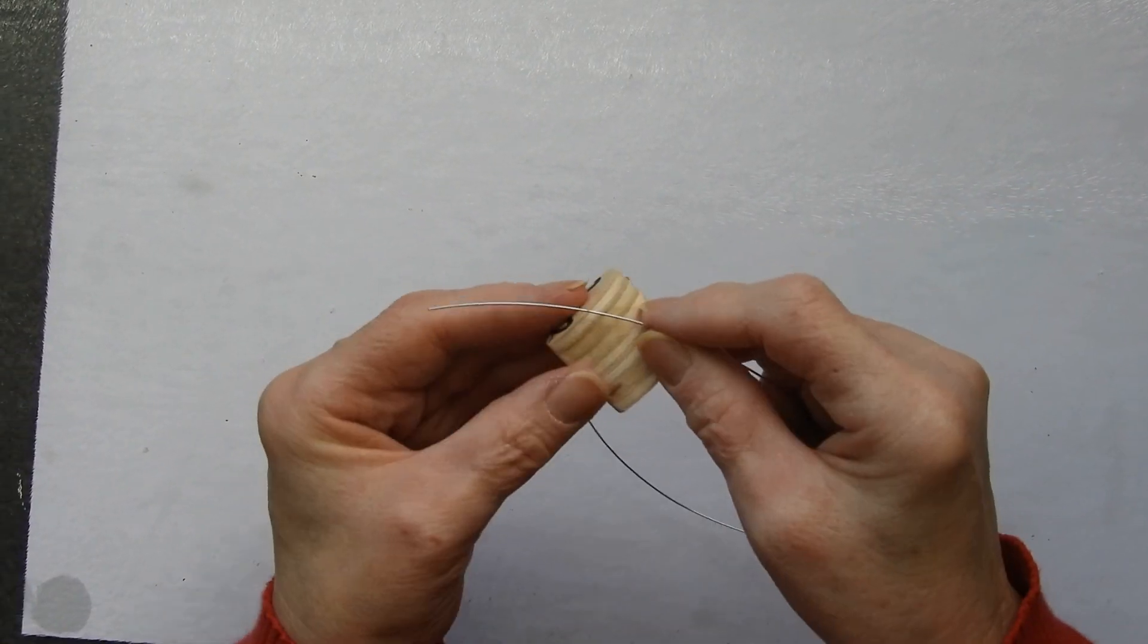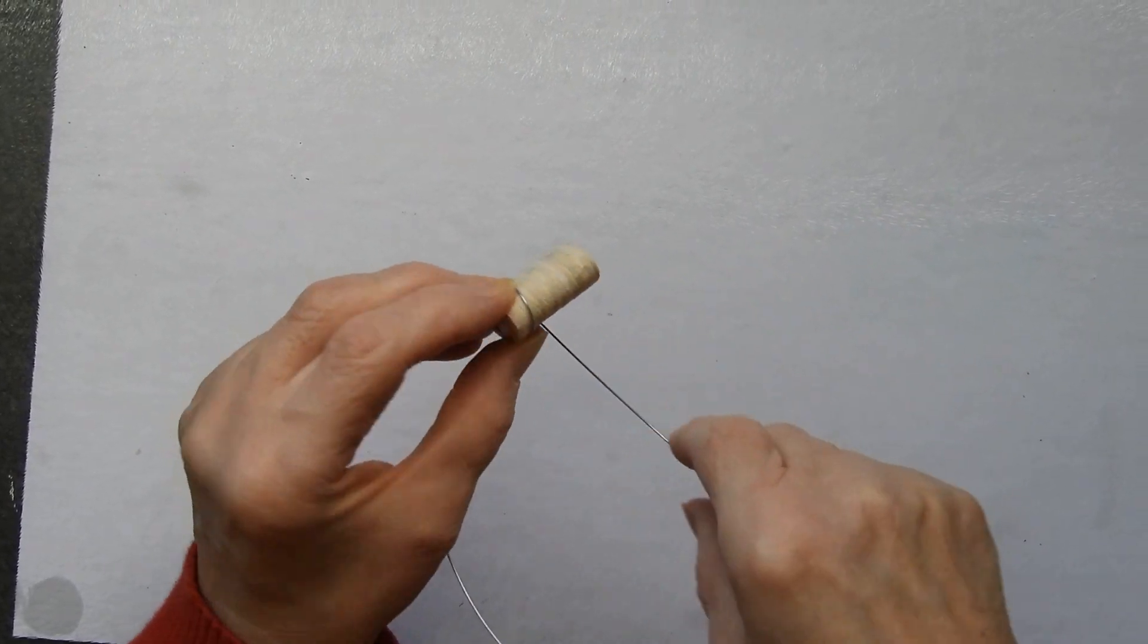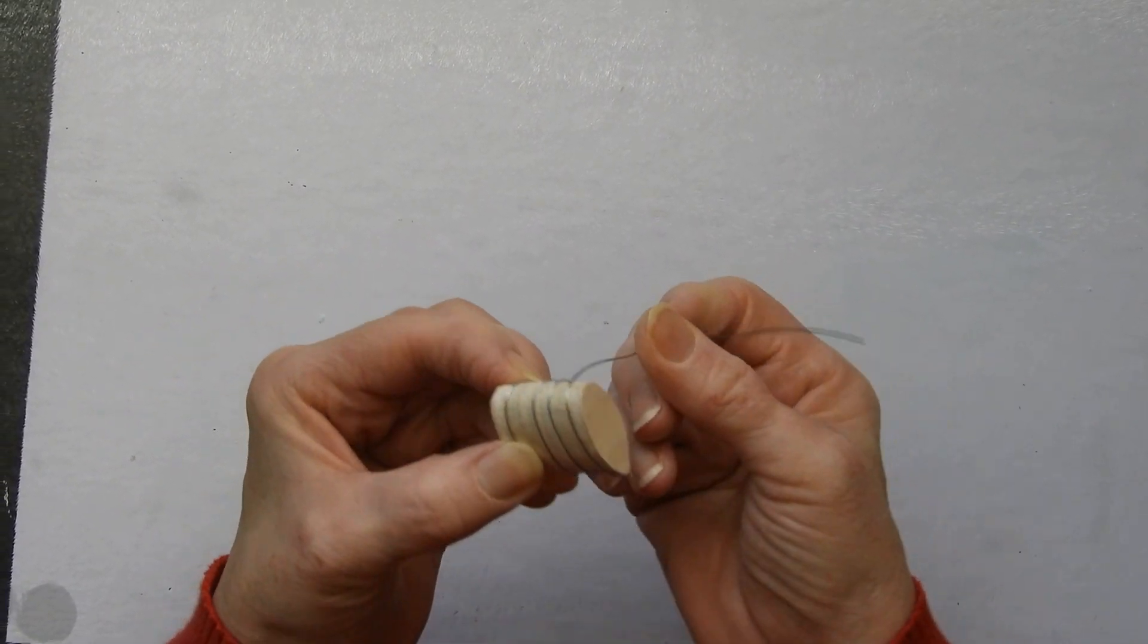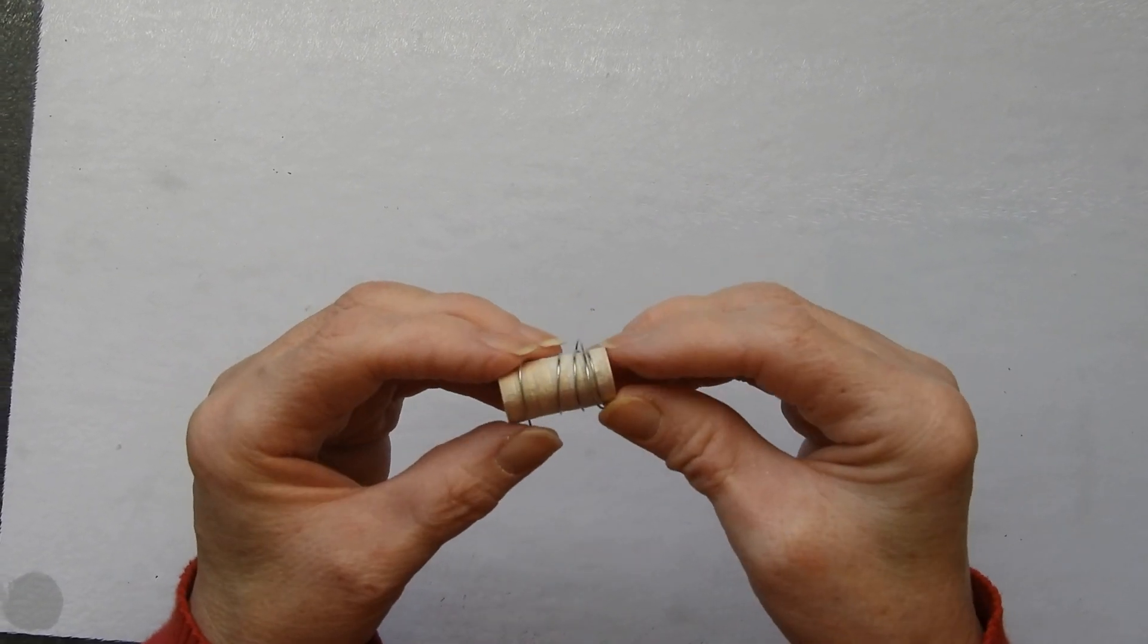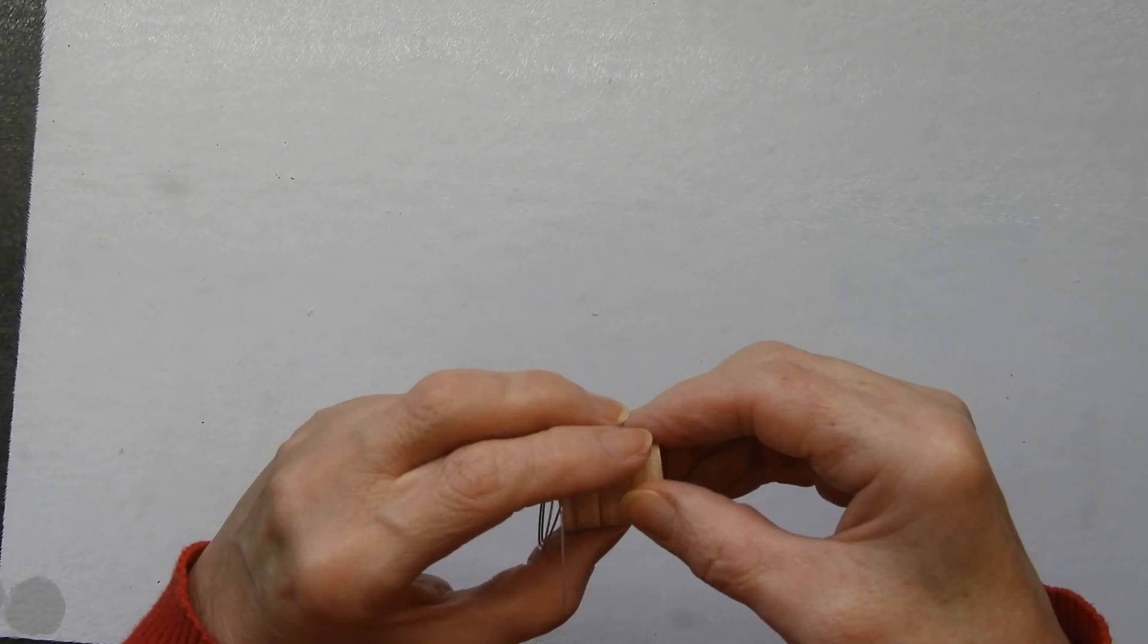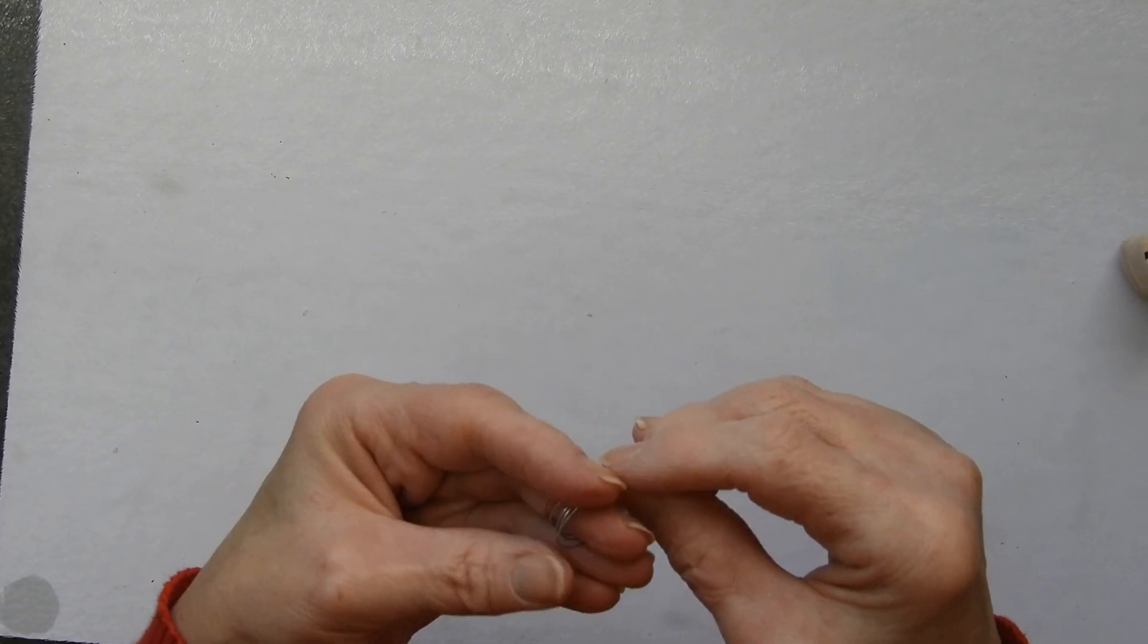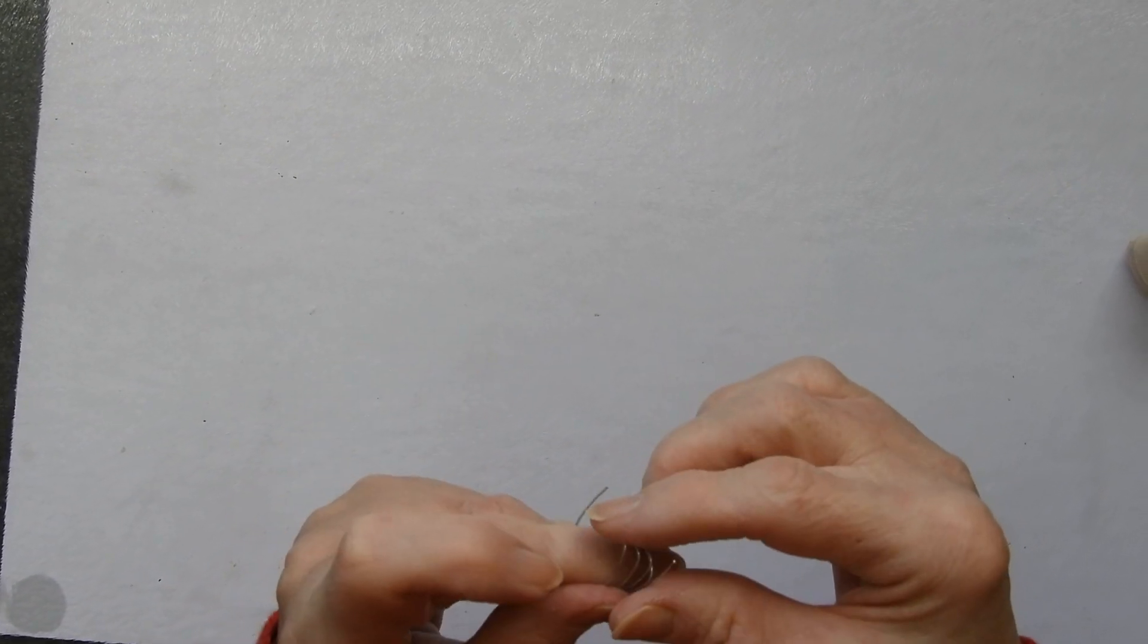And I want to start off at the narrow end and just wrap the wire around a few times. So there we go. Hopefully I can now slide this out. Yep, I can indeed. And I should have pretty much identically shaped petals.